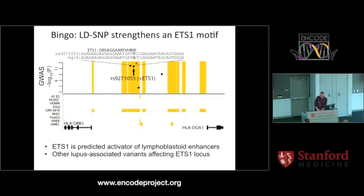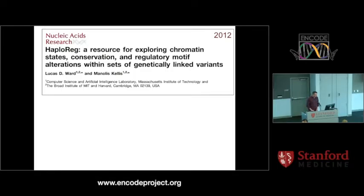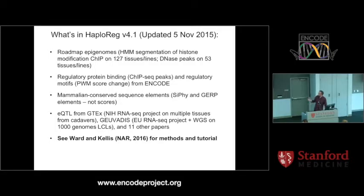For HaploReg, you can now say: let's actually look at the other SNPs that are in the same LD block and see whether there's anything underlying those SNPs that might give us clues about what that region might be doing. If you look at one SNP in particular that's in strong LD with our first SNP, it actually turns out that if you look at the sequence at that particular SNP variant, it actually strengthens a certain binding motif for ETS1, which is a predicted activator of lymphoblastoid enhancers. Moreover, if you look at other variants found in this particular GWAS study, a lot of those also affect the ETS1 locus. So by exploiting the LD structure, you basically get a second chance at finding a potential regulatory mechanism.